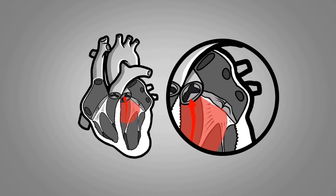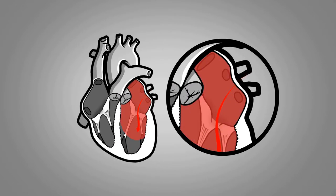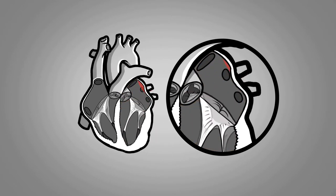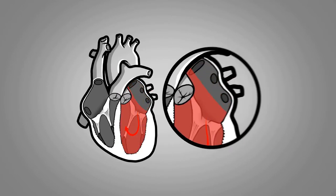That way, the mitral valve forms a barrier preventing blood from returning to the atrium. The only possible way out for the blood is to go forward through the aortic valve.